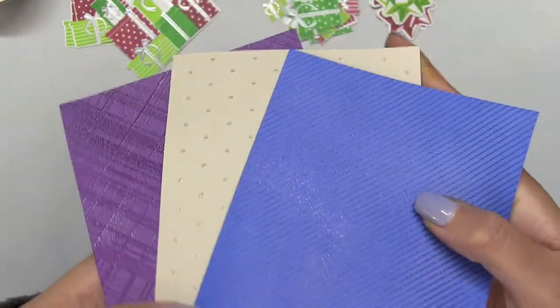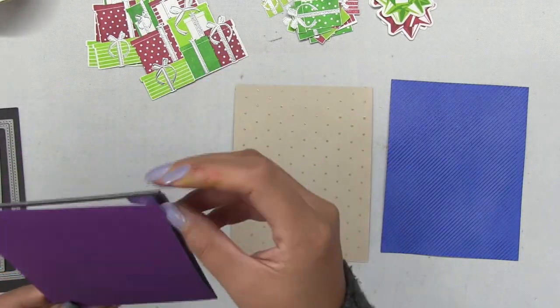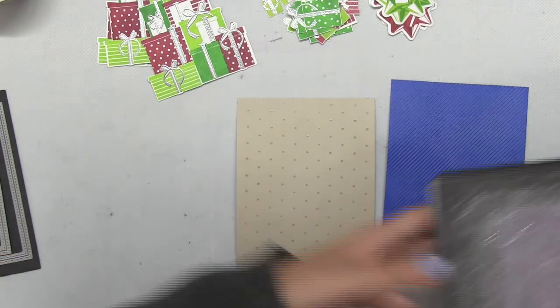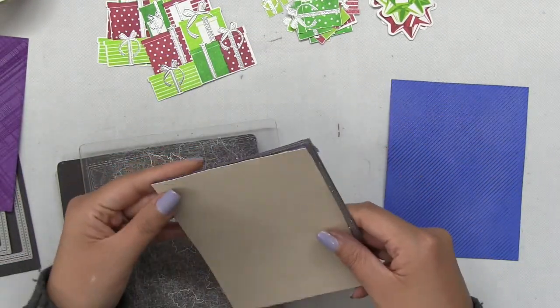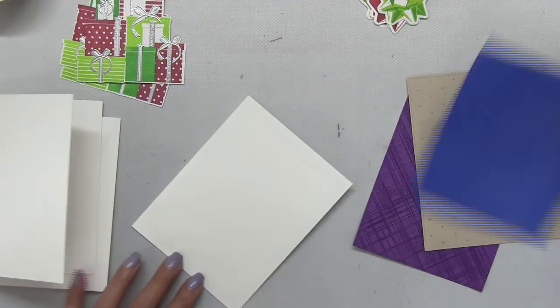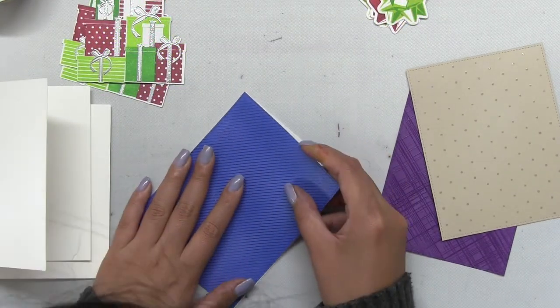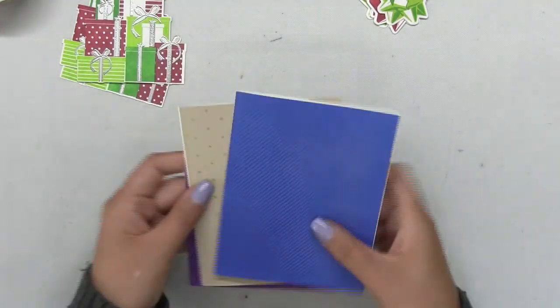I wanted these panels to have more of a finished look, so I added some stitching to the edges of each panel by using the largest die from our double stitch rectangles large die collection. Once all three panels had the stitching on them, I adhered each panel to a side folding A2 card base.